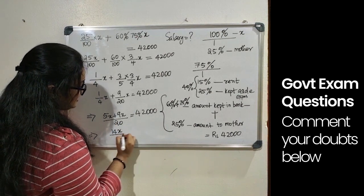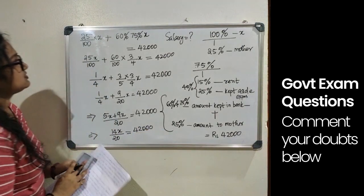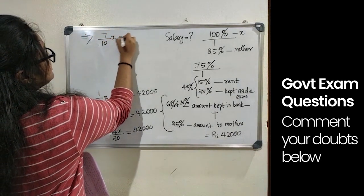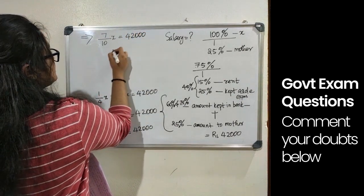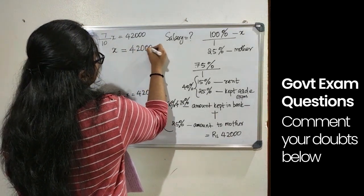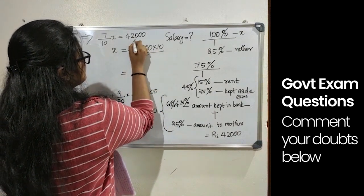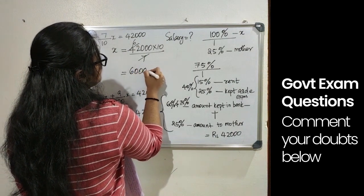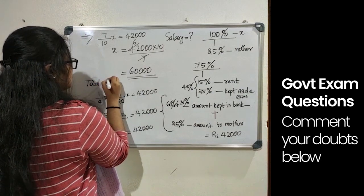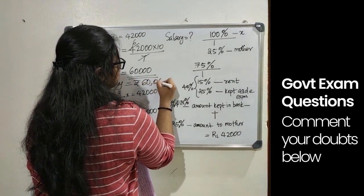That implies 5 x plus 9 x by 20 equals 42,000, which implies 14 x by 20 equals 42,000. X equals 42,000 into 20 by 14, that equals 60,000. So the total salary equals Rs. 60,000.